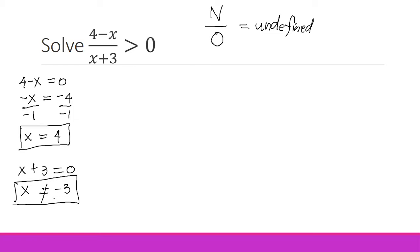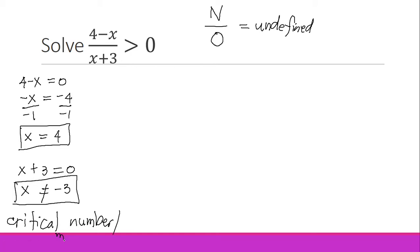In order not to make it undefined, we set it as not equal to instead of equal to. Whatever you've obtained from the numerator and the denominator will be considered our critical numbers — other books refer to these as meaningful numbers. They are our basis for determining which region will be our possible solution.